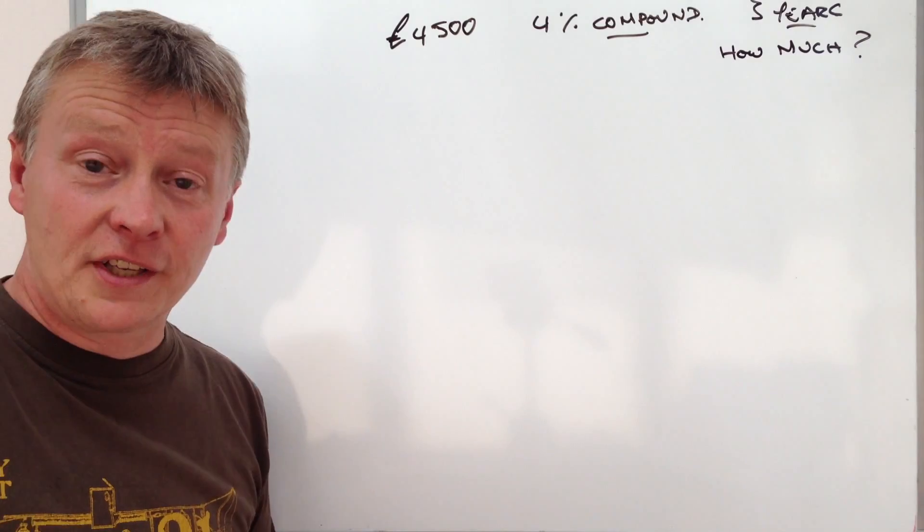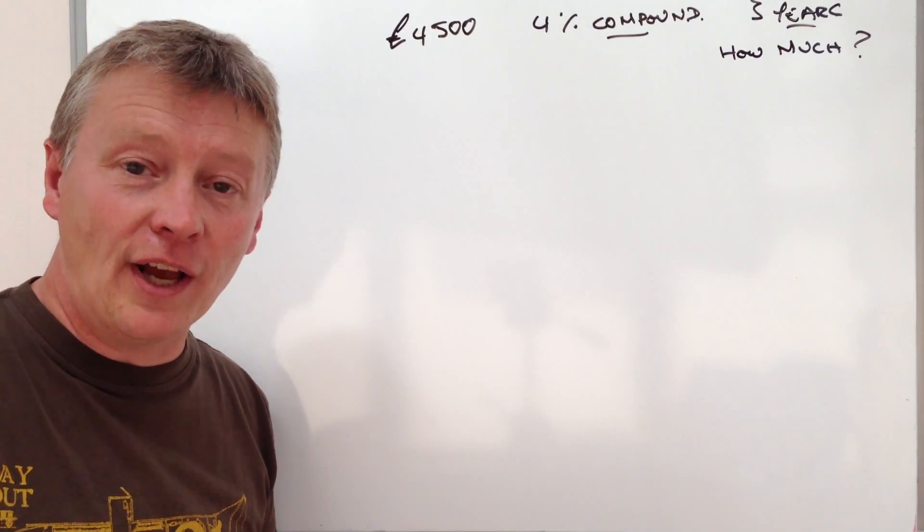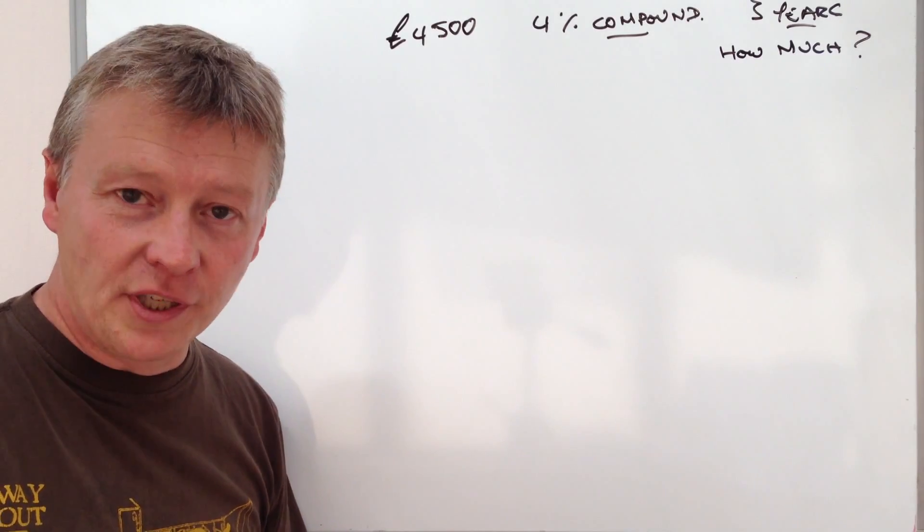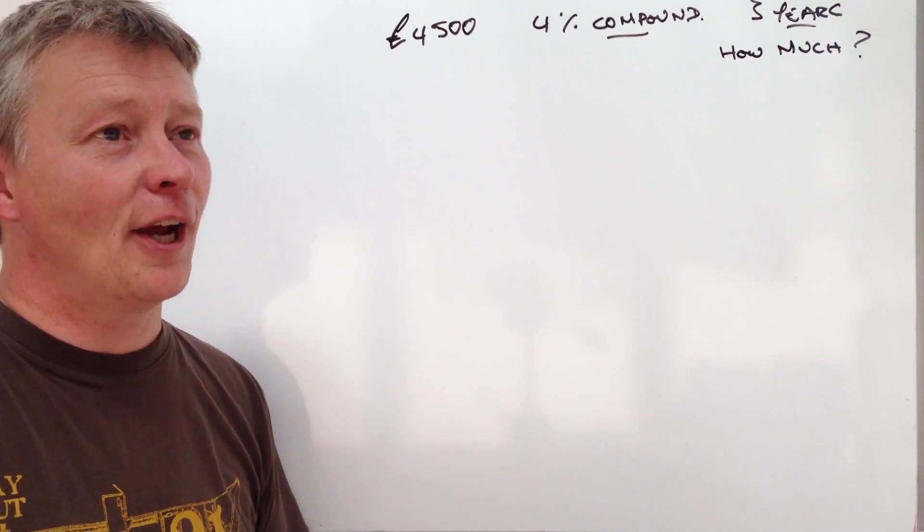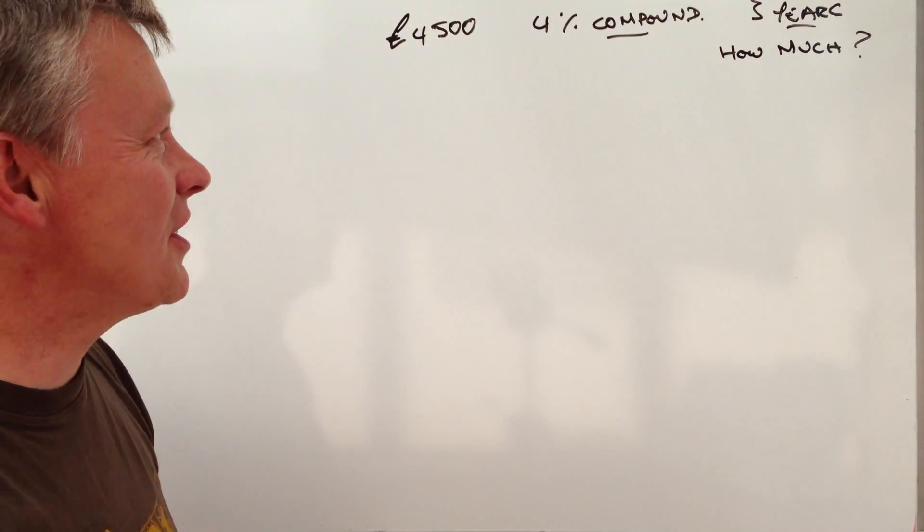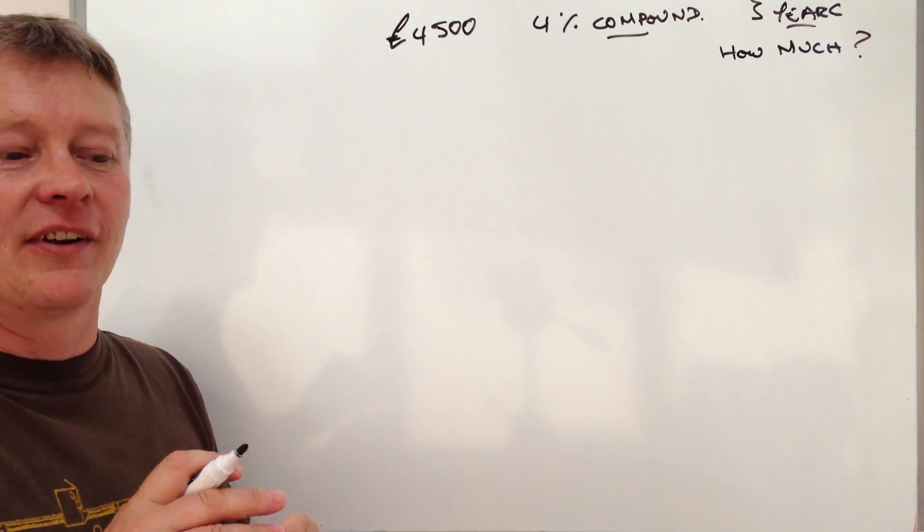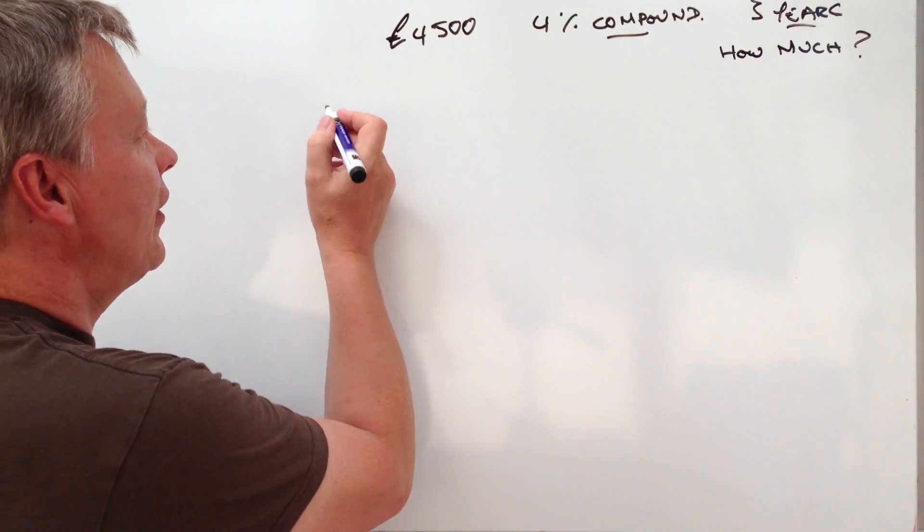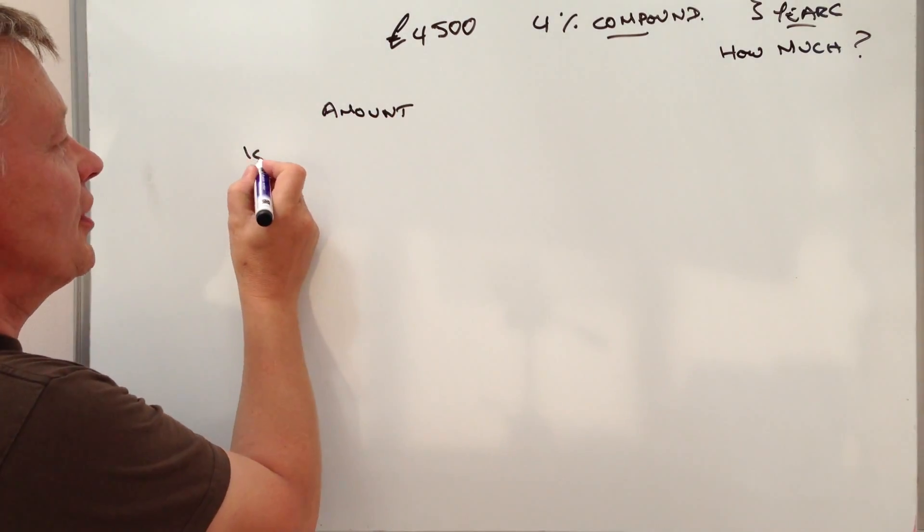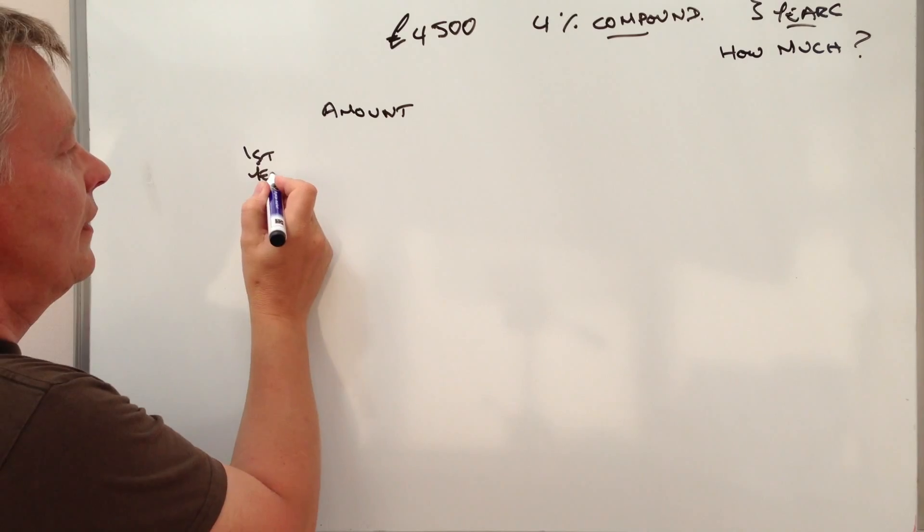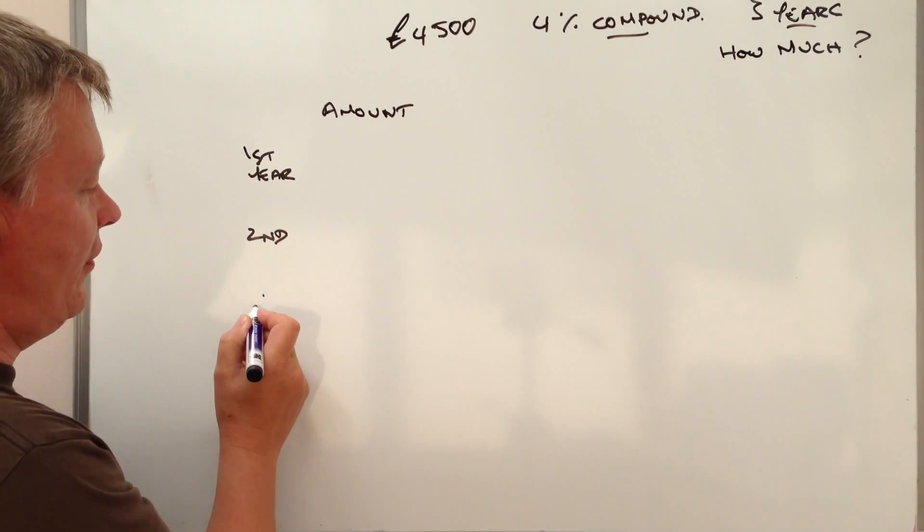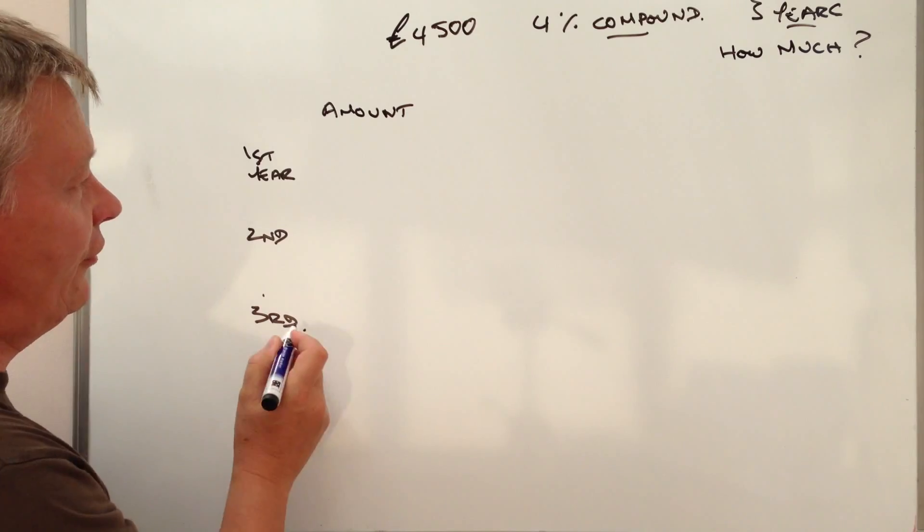Right, the way I'm going to do it today is going to be using a table. However in the next video I'm going to approach exactly the same question but I'm going to use a formula and hopefully the answers will be both the same. So the first thing is with a table, what we generally tend to do is we look at the amount and I'm going to put first year, second year and then finally third year.